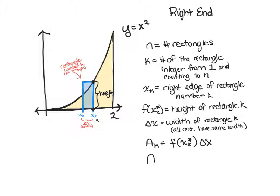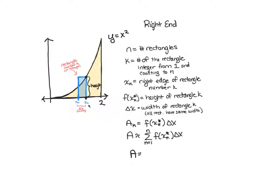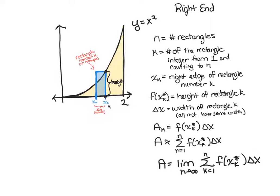And then the entire area is approximately the sum starting with rectangle 1 and ending with rectangle number n of adding up all the areas of each of the individual rectangles. And then if we want the exact area, we're going to take the limit as n goes to infinity of the sum. So what I want to do in this video is I just want to go over again how we find this exact area under x squared between 0 and 2, kind of slowly and pointing out each of the steps.